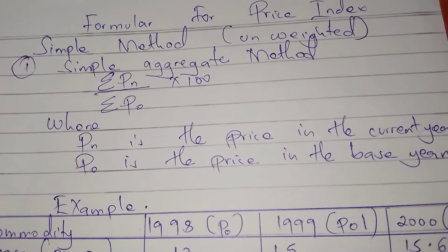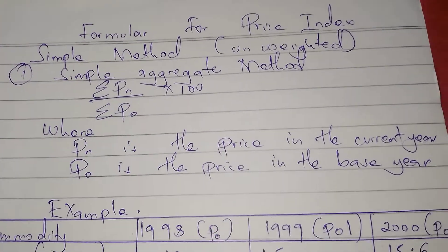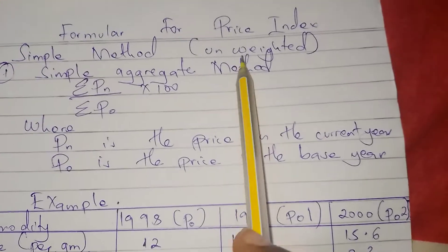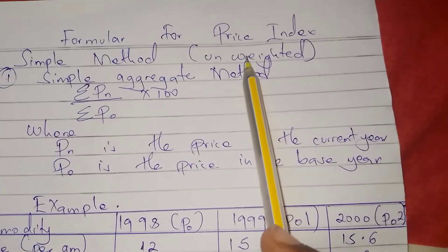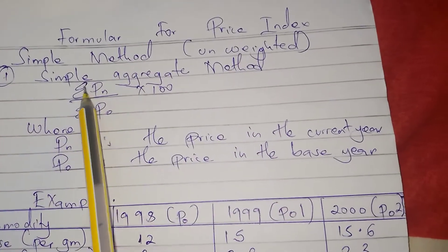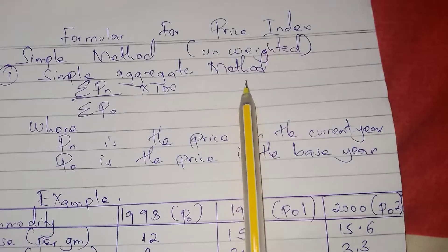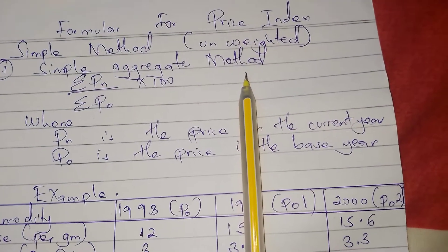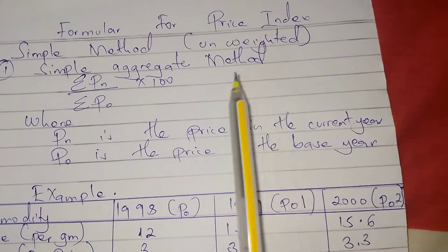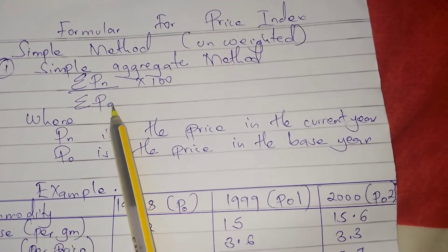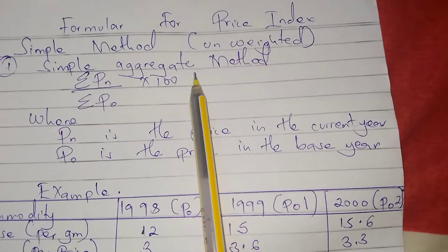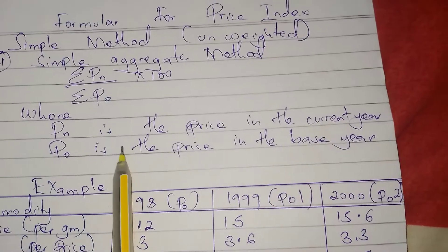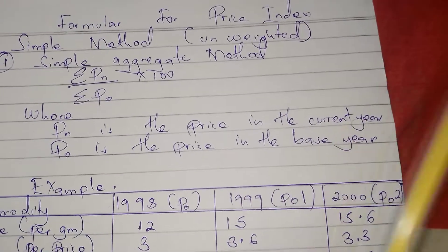Let's look at price index. We shall start by using the simple methods, also known as the unweighted methods, that have no weight or quantity attached. We shall start with the simple aggregate method. The formula for calculating the simple aggregate method is: summation of Pn divided by summation of P-naught, times 100, whereby Pn is the price in the current year and P-naught is the price in the base year.